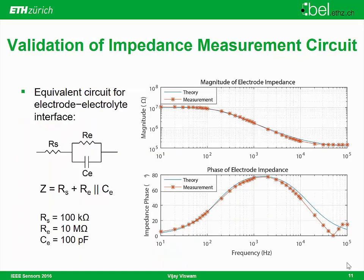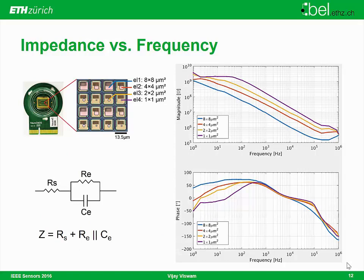To validate the method, we measured an equivalent circuit at the electrodes, and the theoretical and practical measurements agree well at high-frequency. For real measurements, we tested four different electrode sizes and measured their impedances. As you can see, smaller electrodes have higher impedances. All electrode sizes follow the behavior where the low-frequency range is dominated by double-layer capacitance, and we also observe the parasitic capacitance between the traces.